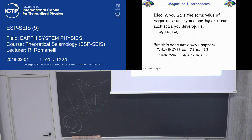A seminal paper by Kanamori and Anderson dealt with the largest earthquakes collected up to that time. The MS values were 8, 8.1, 9.2 — but nothing more. They had the feeling that earthquakes, especially those from subduction zones, should be larger.